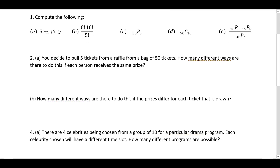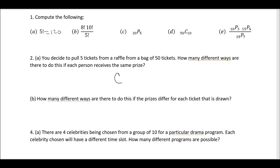Now that we know how to calculate permutations, combinations, and factorials on Excel, we should be able to apply these to a given scenario. So you decide to pull five tickets from a raffle from a bag of 50 tickets. How many different ways are there to do this if each person receives the same prize? Since each person receives the same prize, it doesn't matter which five tickets you select — the order does not matter. So we are looking at a combination. We have 50, and we are choosing 5. So we calculate 50 choose 5: equals COMBIN(50, 5), giving us 2,118,760.